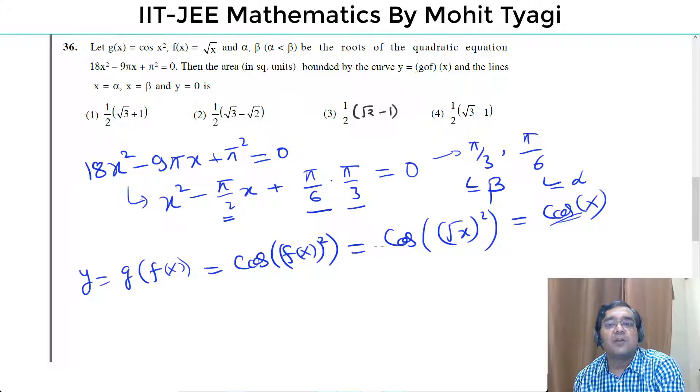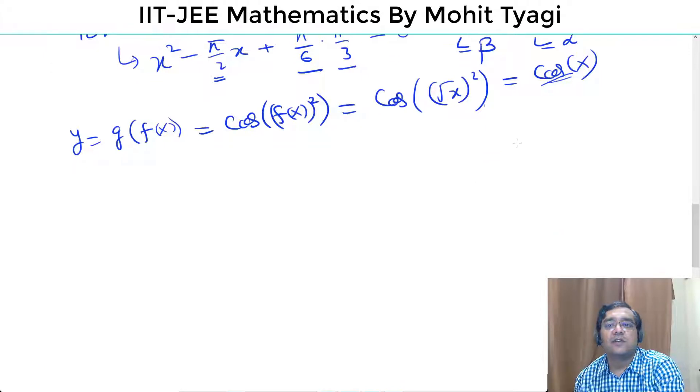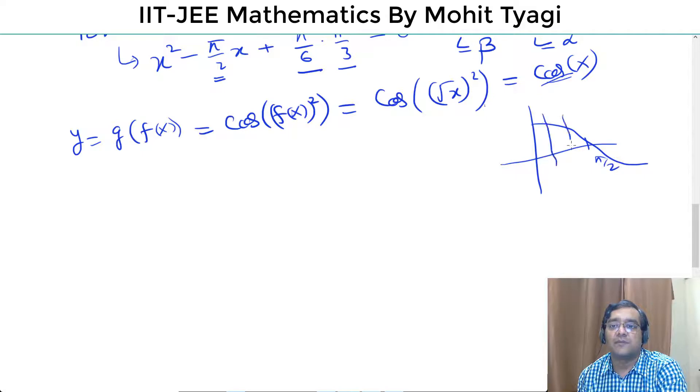We have the curve and the lines x = alpha, x = beta. So we have two vertical lines: x = π/6 and x = π/3, and x-axis. So the curve and x-axis between π/6 and π/3.